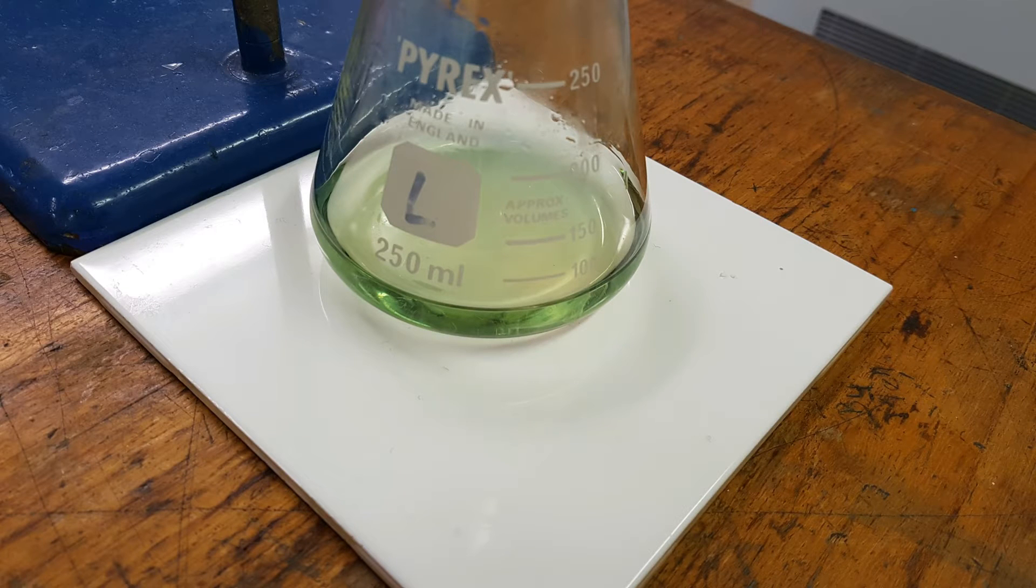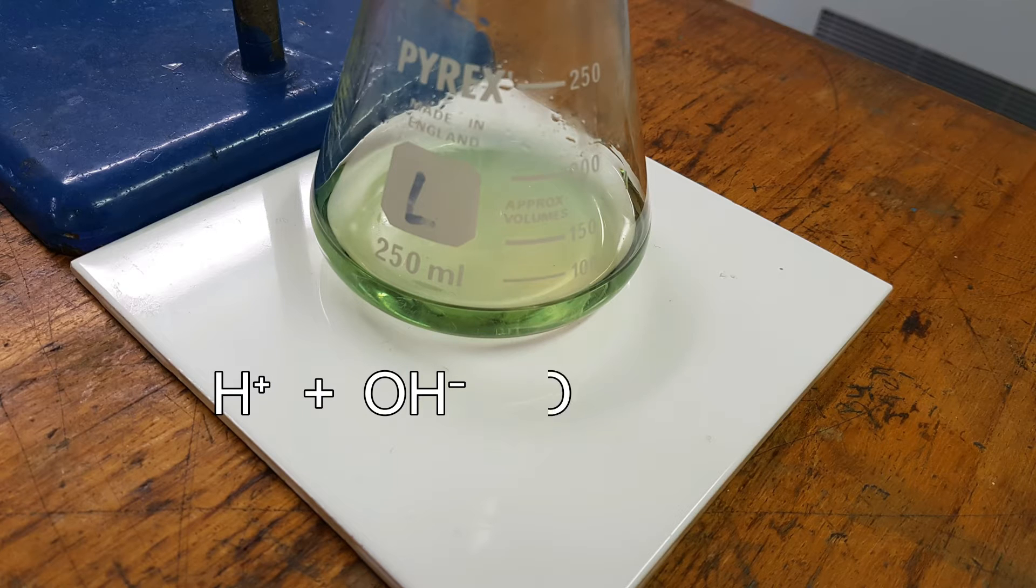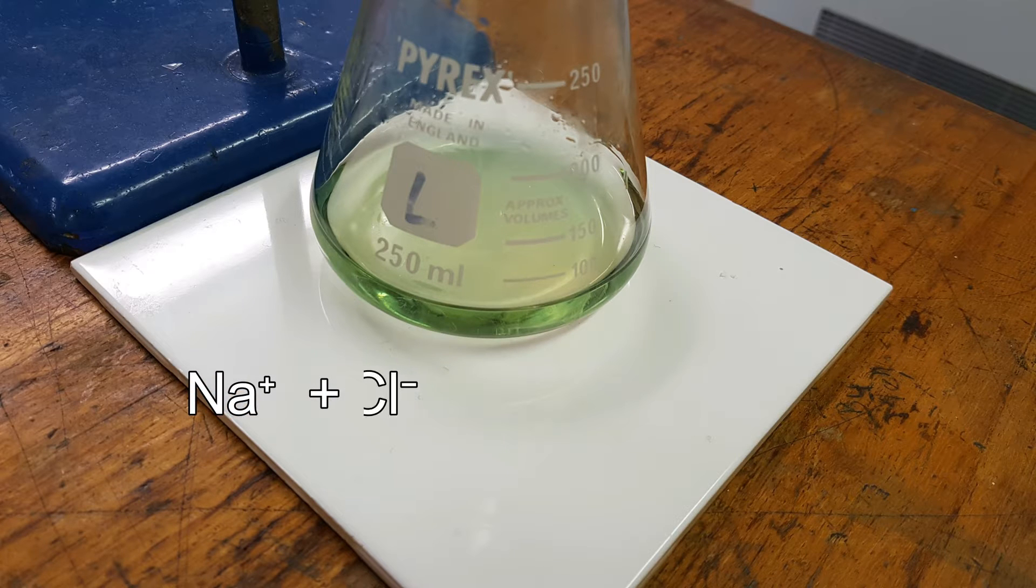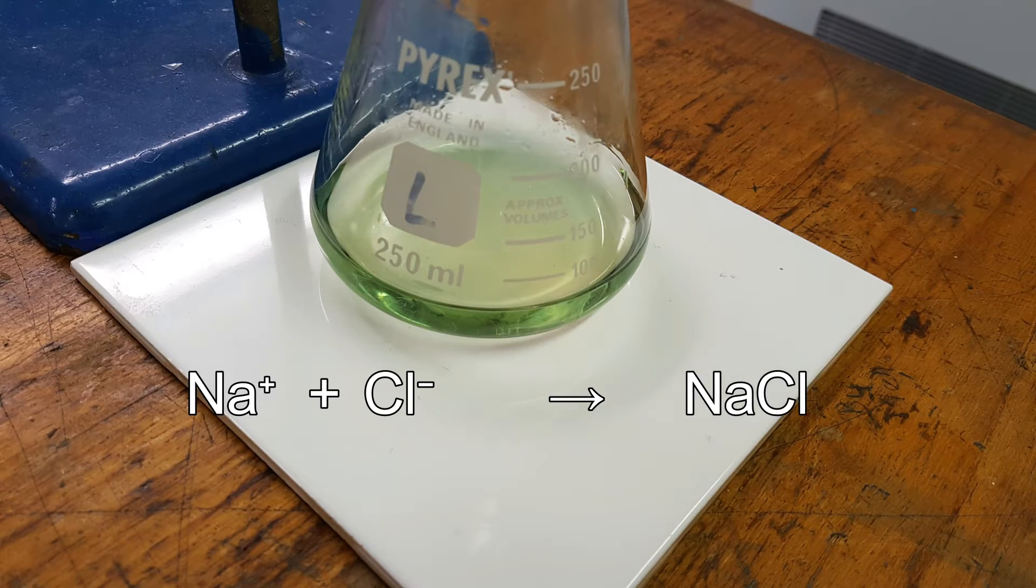What happens in a neutralization reaction is the H plus ions and the OH minus ions react together. This forms your water, your byproduct. The ions left over, in this case the sodium and the chloride ions, react together and they form your salt, which in this case is sodium chloride.